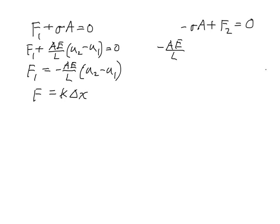Following through the same technique on the right-hand side, negative AE over l times (u2 minus u1) is what that first term becomes, plus f2 equals 0. Rearranging terms, then, we'll get f2 is equal to AE over l times (u2 minus u1).